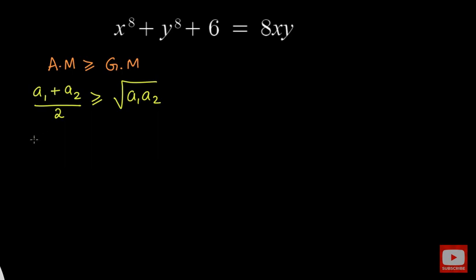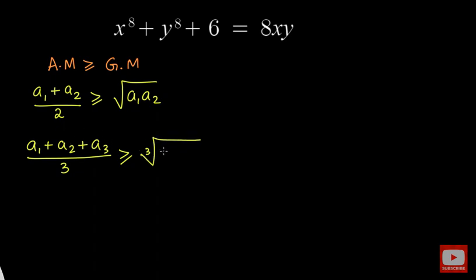Let us say we have three numbers a1, a2, and a3. The arithmetic mean will be the sum of the numbers divided by the number of entries, that is 3. This is greater than or equal to the cube root — since we have three entries — of a1 times a2 times a3. The equality exists only when the numbers are equal to each other.